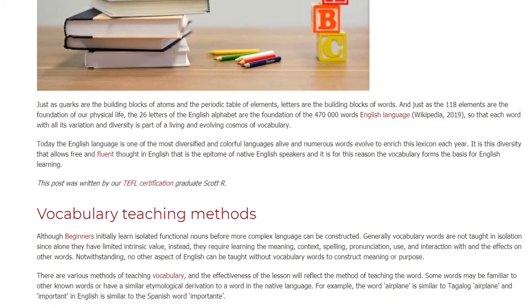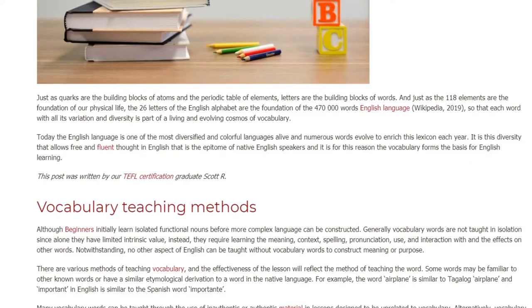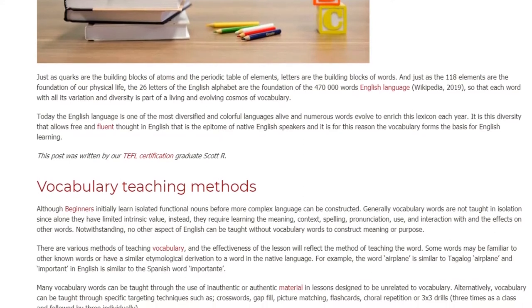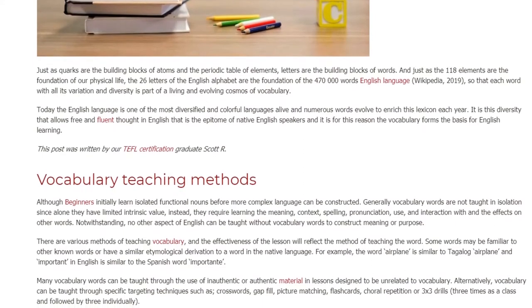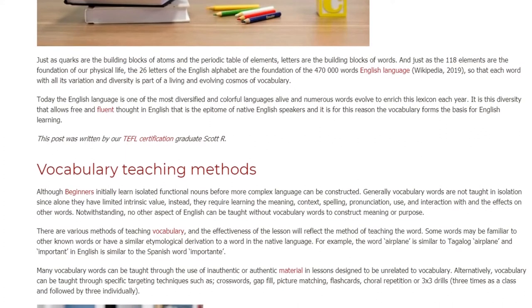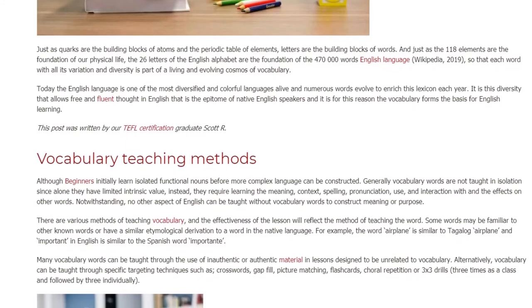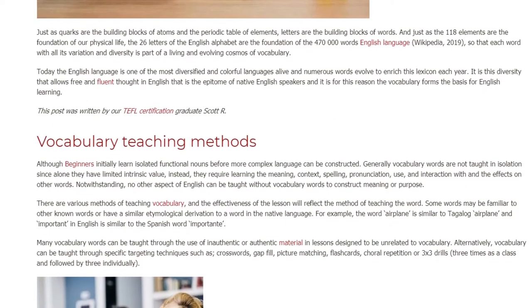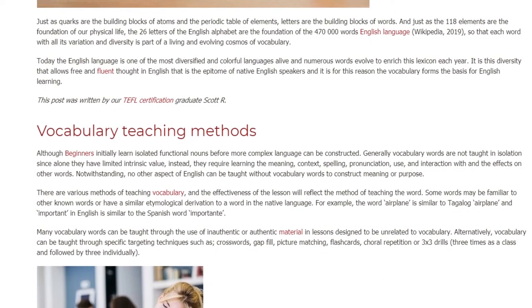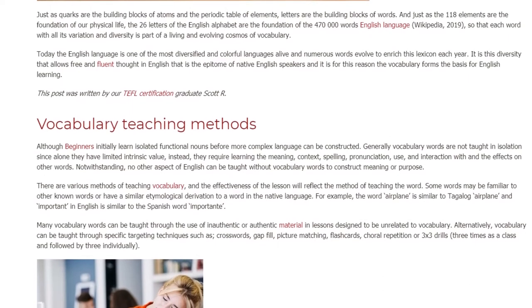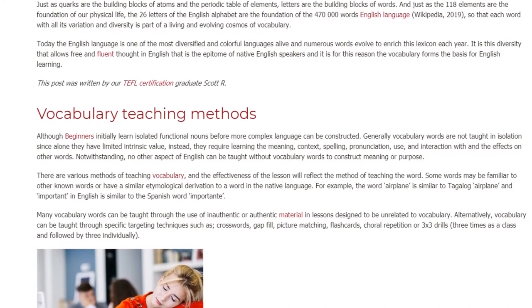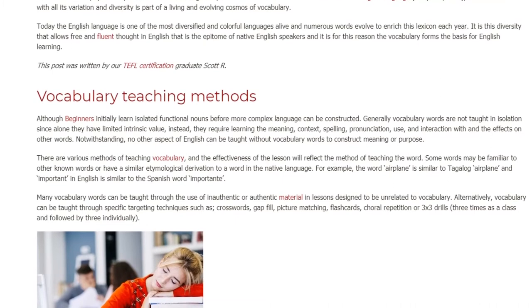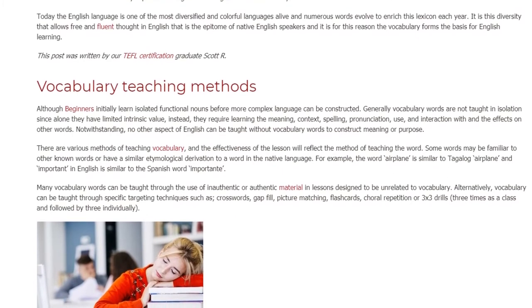Although beginners initially learn isolated functional nouns before more complex language can be constructed, vocabulary words are generally not taught in isolation, since alone they have limited intrinsic value. Instead, they require learning the meaning, context, spelling, pronunciation, use, and interaction with and effects on other words. Notwithstanding, no other aspect of English can be taught without vocabulary words to construct meaning or purpose.